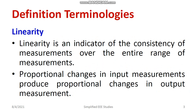Let's understand what linearity means. Linearity is an indicator of the consistency of the measurement over the entire range of measurement. It is one of the positive factors for every type of instrument. Linearity means that proportional changes in the input produce proportional changes in the output — the input and output are directly proportional. If A is the input and B is the output, a device is said to be linear when A and B are directly proportional: as A increases, B also increases. This is called linearity, and you can also call it a uniform scale.